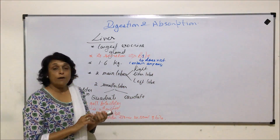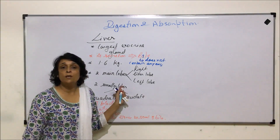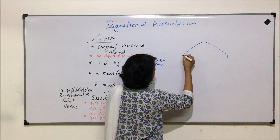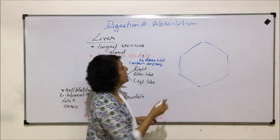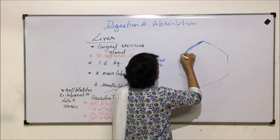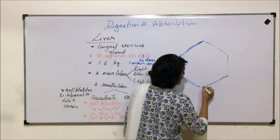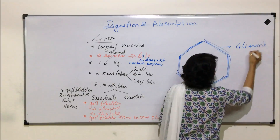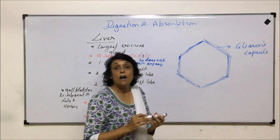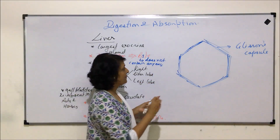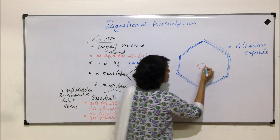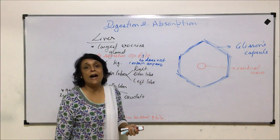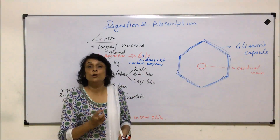Talking about the internal structure, the liver is made up of hexagonal or polygonal lobules. Each lobule is surrounded by a fibrous layer which forms a capsule known as Glisson's capsule — this fibrous layer maintains the shape of the lobule. In the center of each lobule is a canal known as the central vein.